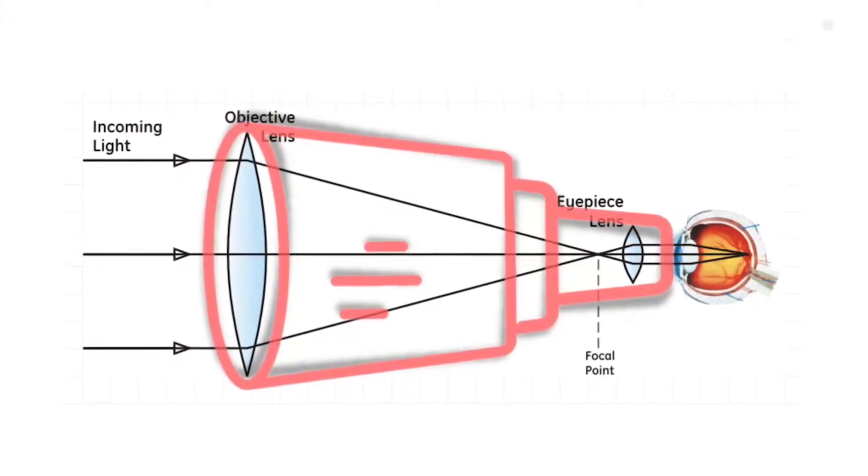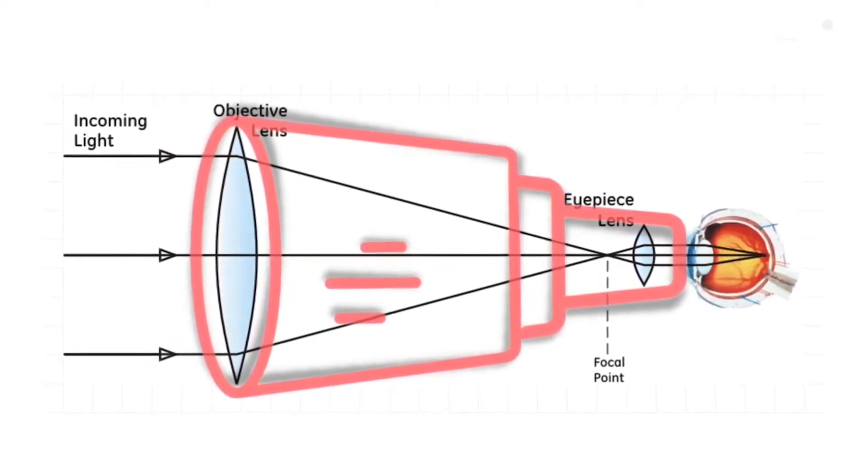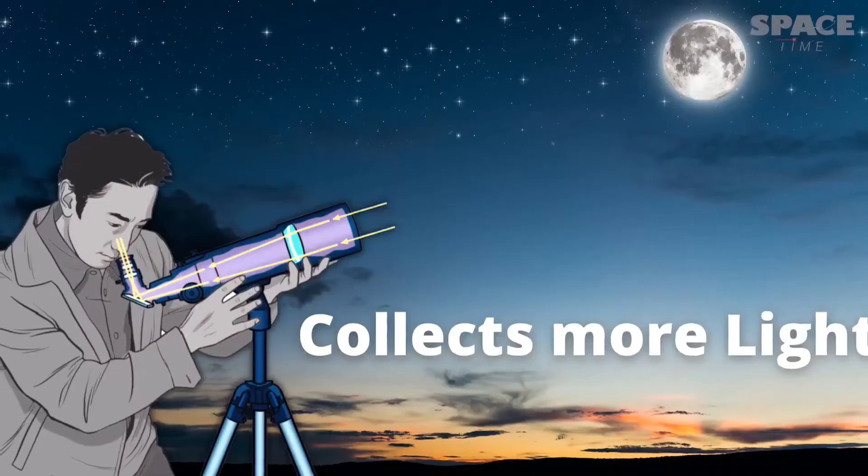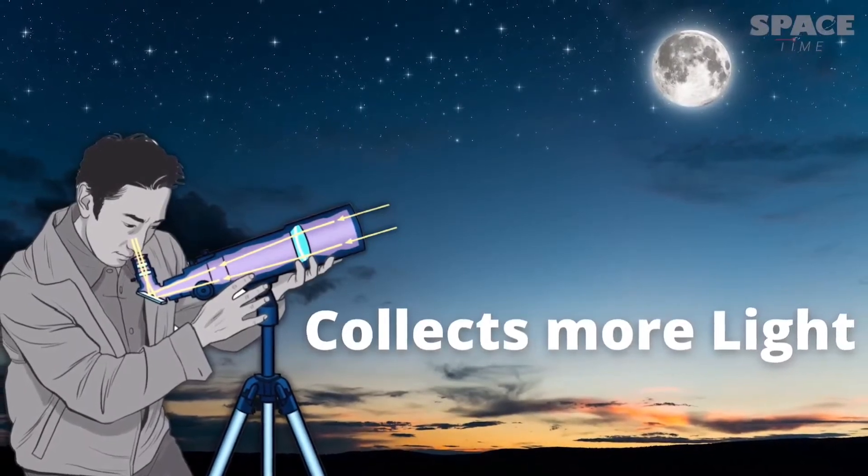In this process, notice how the telescope has taken all the light passing through the objective lens and compressed it down to a column of light that passes through the pupil of the eye. Doing so, it collects way more light than our eyes to make a bright image.